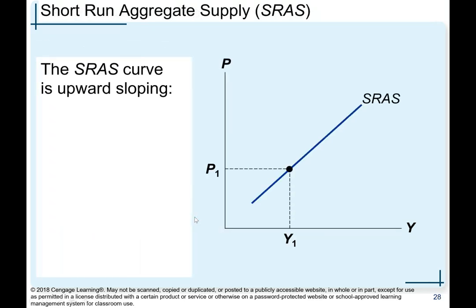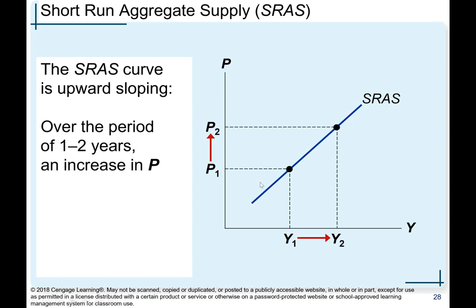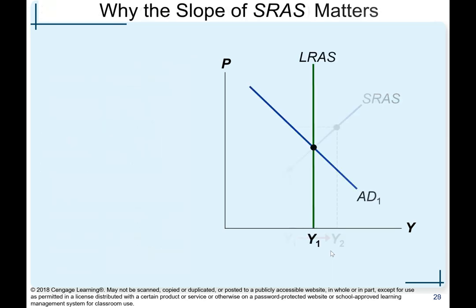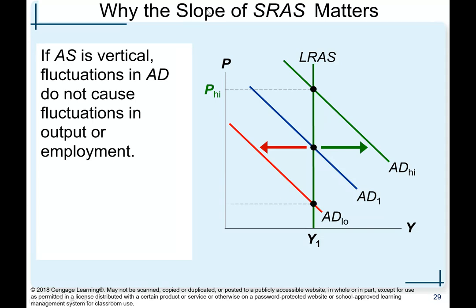Short-run aggregate supply is upward sloping over a period of one to two years — that is the definition of the short run. An increase in price, say from P1 to P2, causes an increase in quantity of goods and services supplied, moving from Y1 to Y2. Why does the slope of short-run aggregate supply matter? When aggregate supply is vertical, fluctuations in aggregate demand do not cause fluctuations in output or employment — shifts from AD1 to AD2 do not change Y.